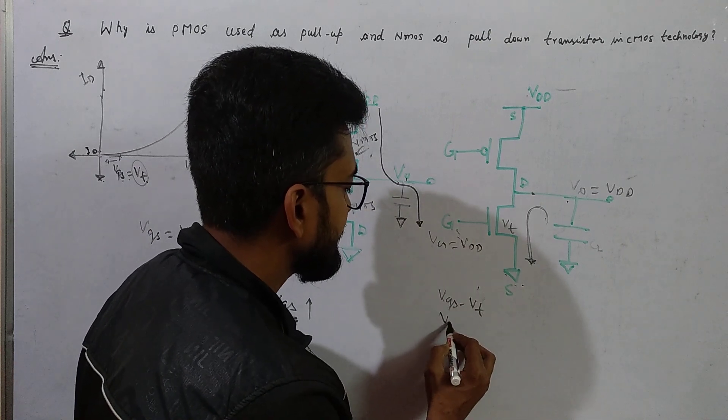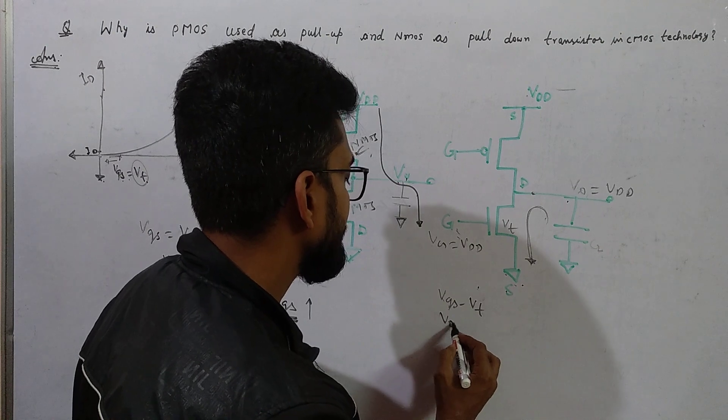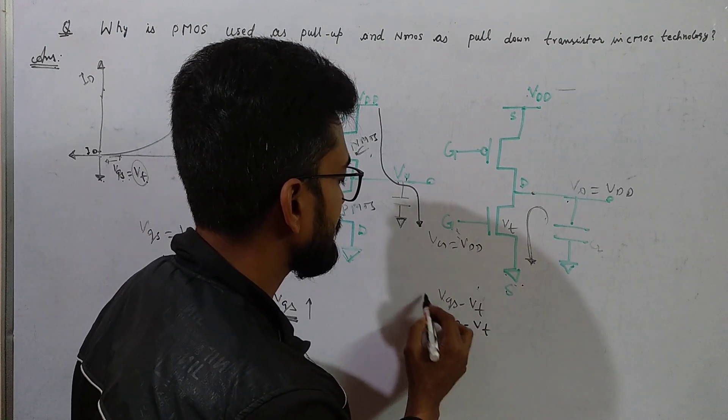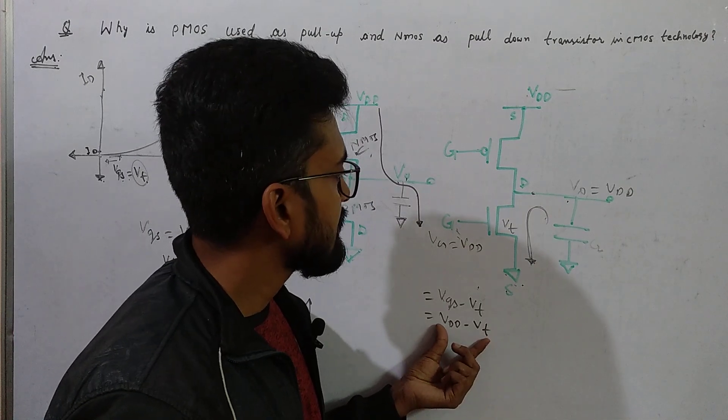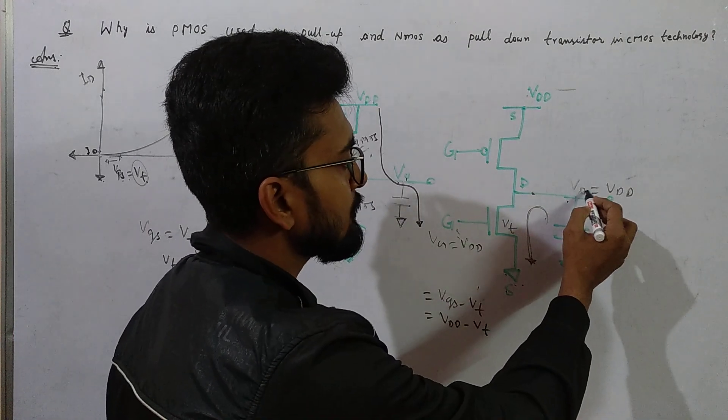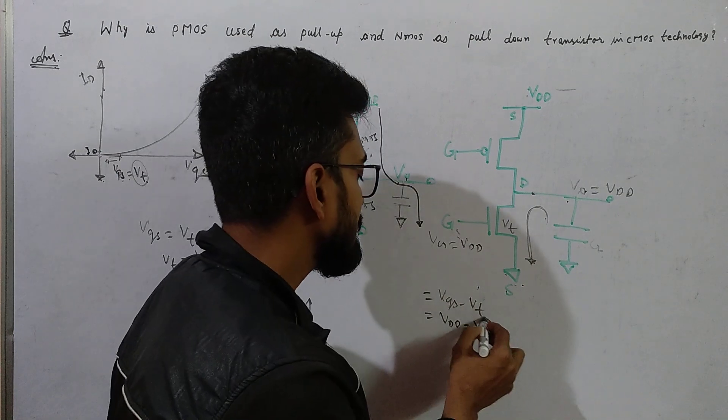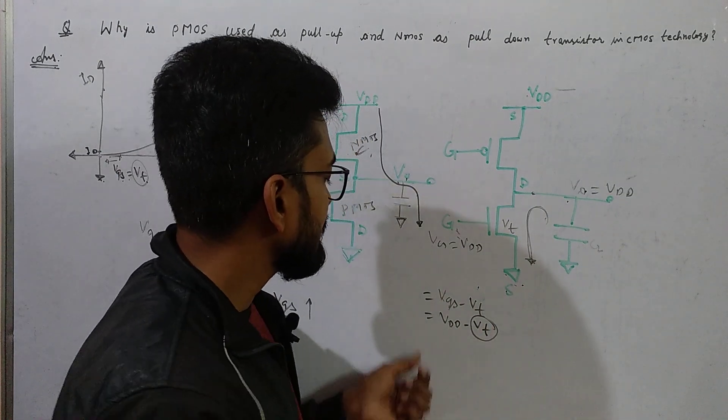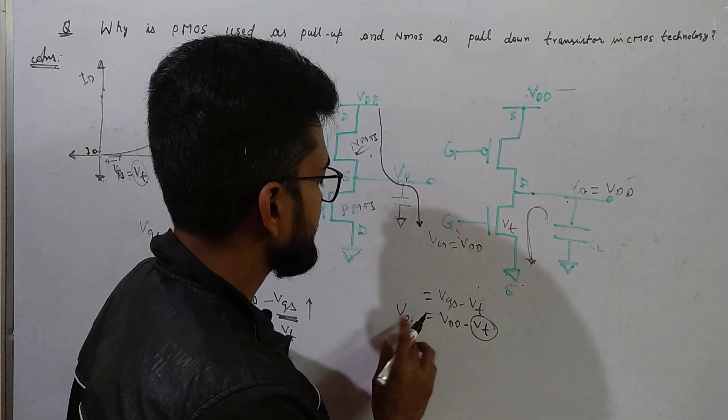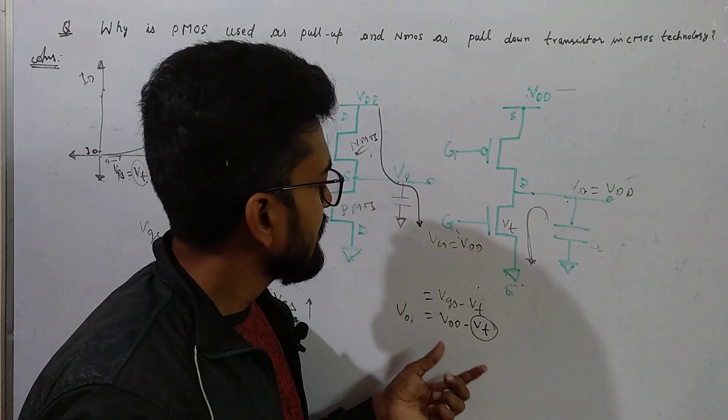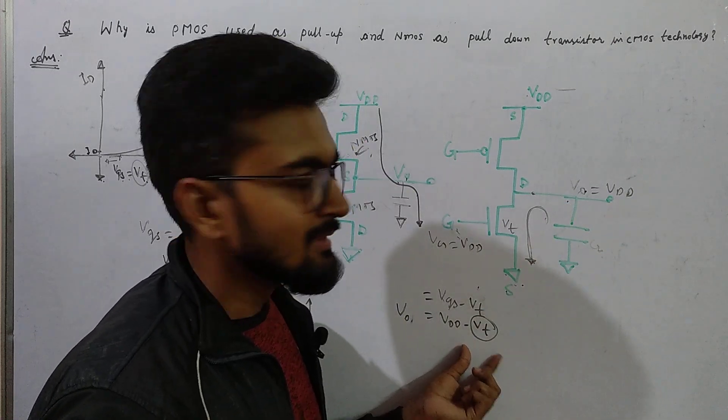VGS can be written as VG minus VS. Source is at 0, so it is VDD minus VT. This VDD minus VT, the output voltage, does not depend on the threshold voltage. This is basically the overdrive voltage. The output voltage does not depend on the threshold voltage.